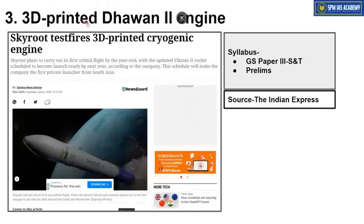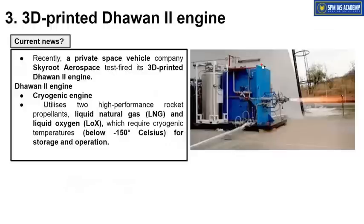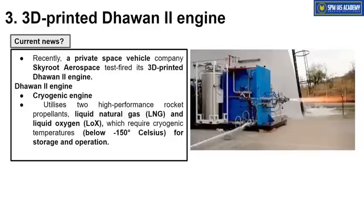The next article is about the 3D printed Dhawan 2 engine, important from GS Paper 3 Science and Technology point of view. Current news is that Indian private space vehicle company Skyroot Aerospace has built a 3D printed Dhawan 2 engine — named after Dr. Satish Dhawan. The Dhawan 2 is a cryogenic engine, similar to the cryogenic engine used in GSLV Mk2 or Mk3, where the third stage is cryogenic.